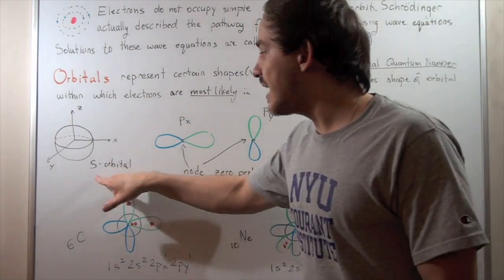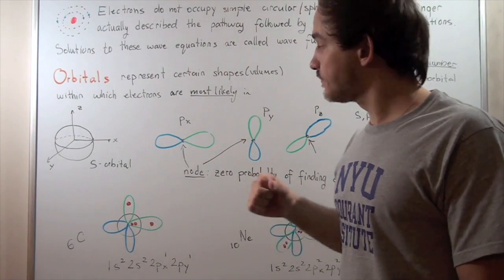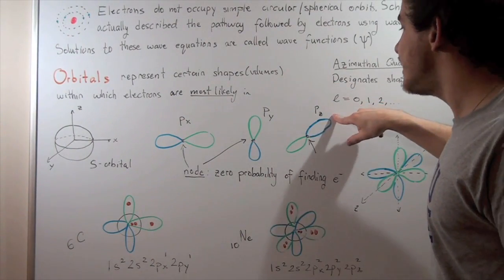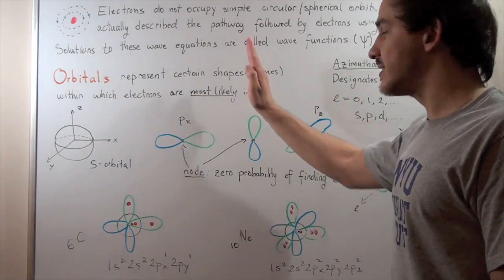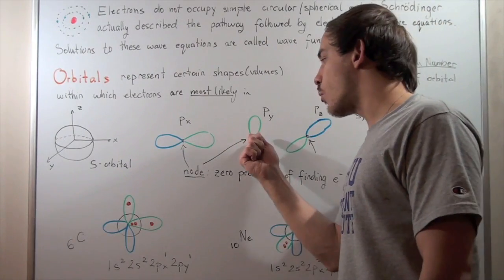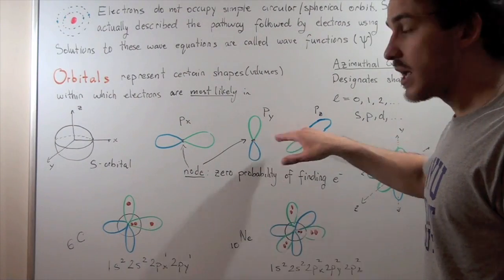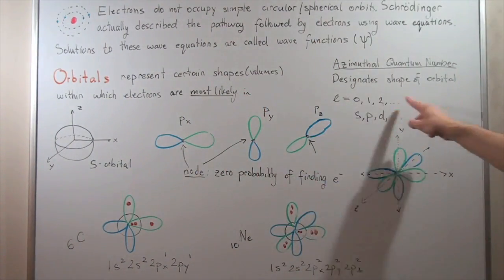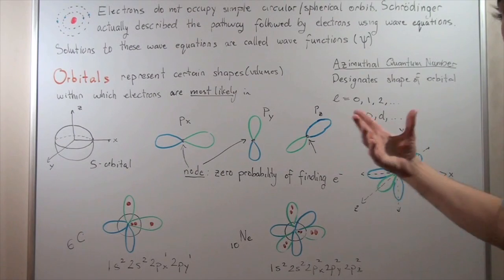The P orbital, unlike the S orbital, has a dumbbell-like shape, or a sideways figure-eight. We have the PX orbital, we have the PY orbital, and the PZ orbital. If we label the X axis, the Y axis, and the Z axis — with the Z axis coming out of or going into the board — then we have three separate orbitals. If we take these three and put them together, we get the overall P orbital, which looks like a three-dimensional flower.